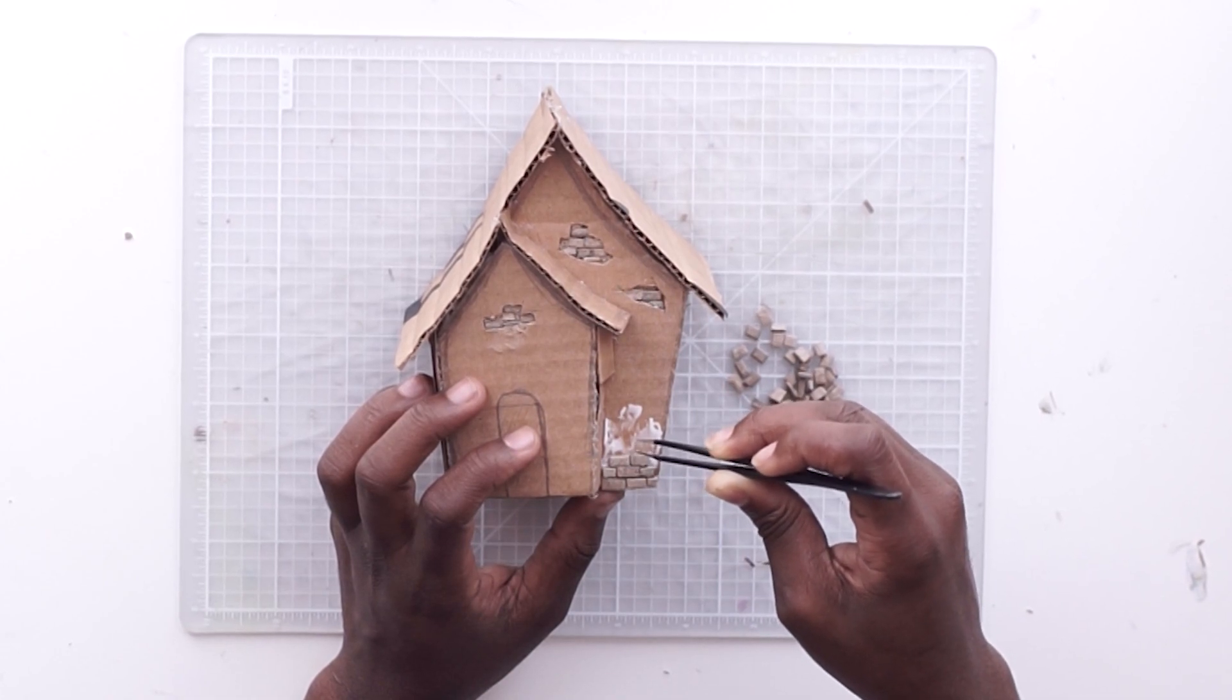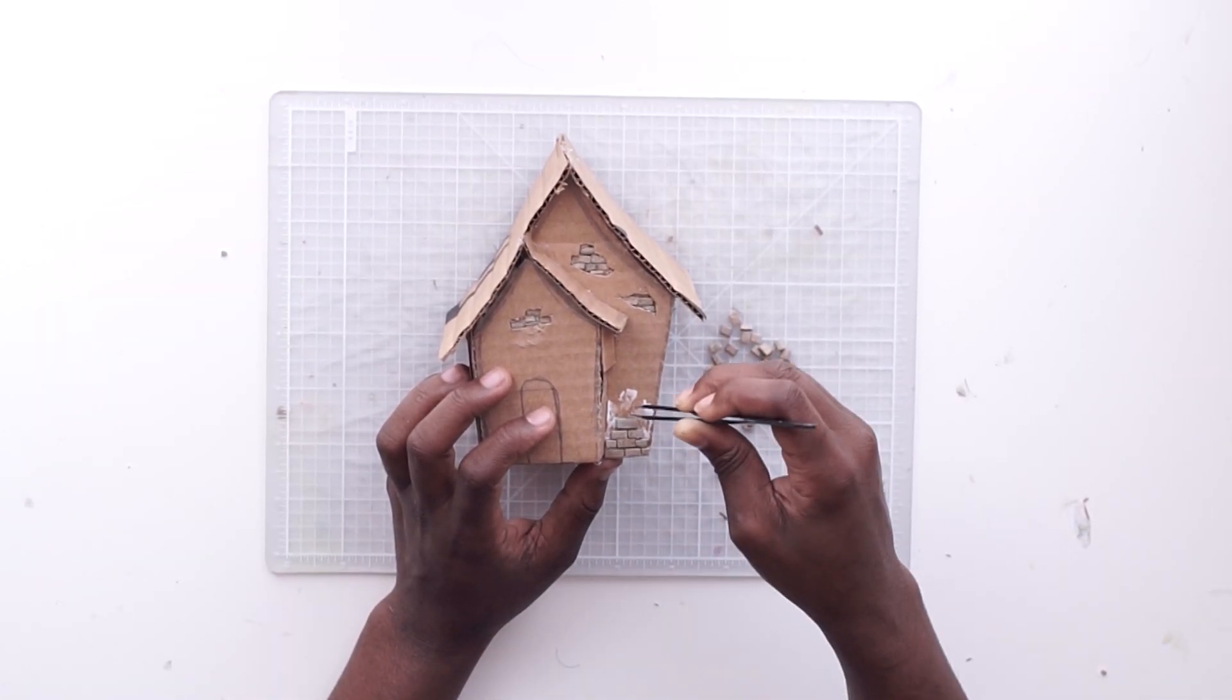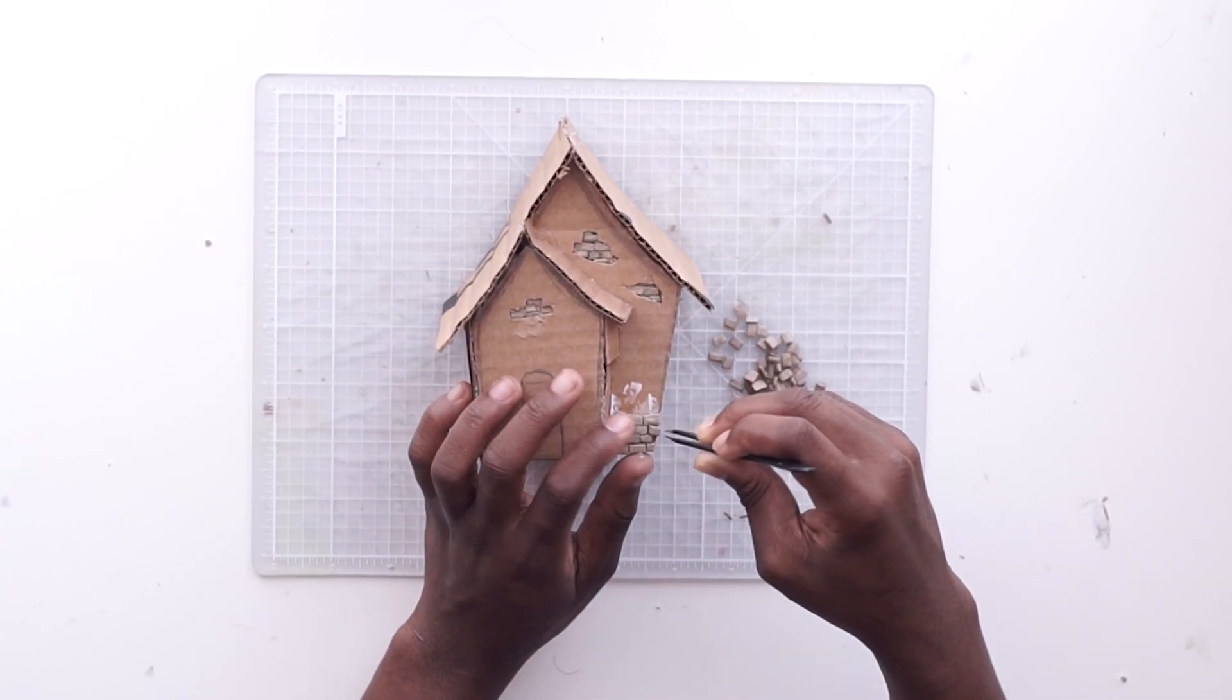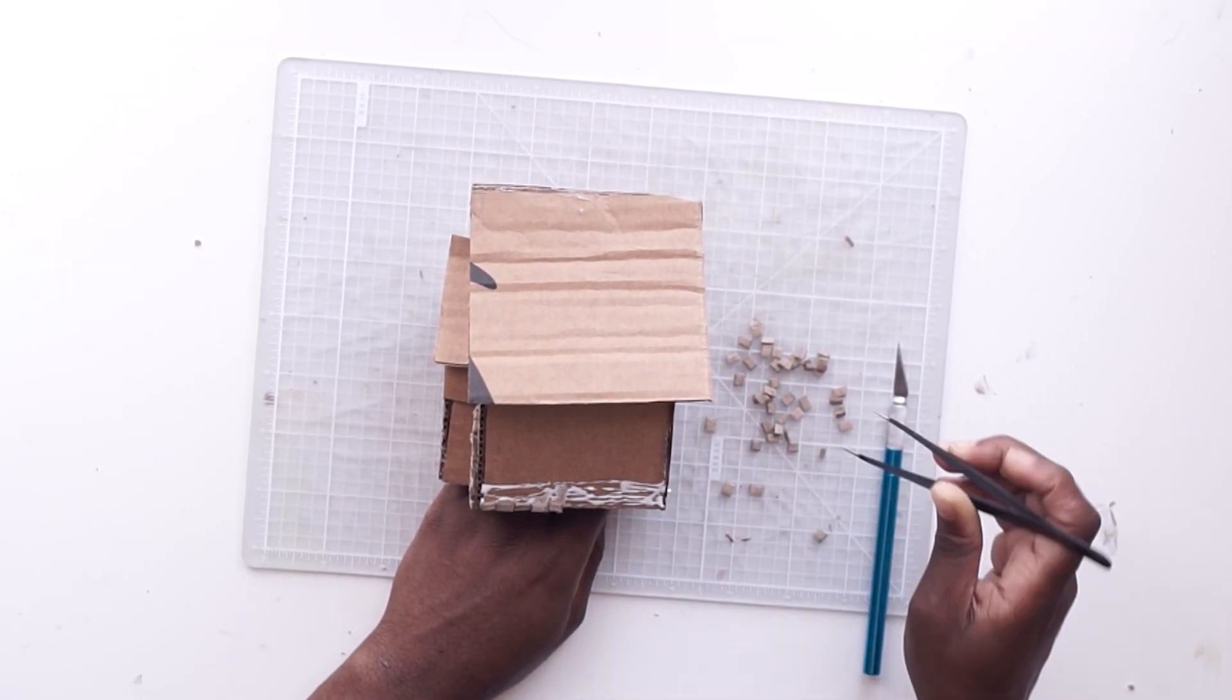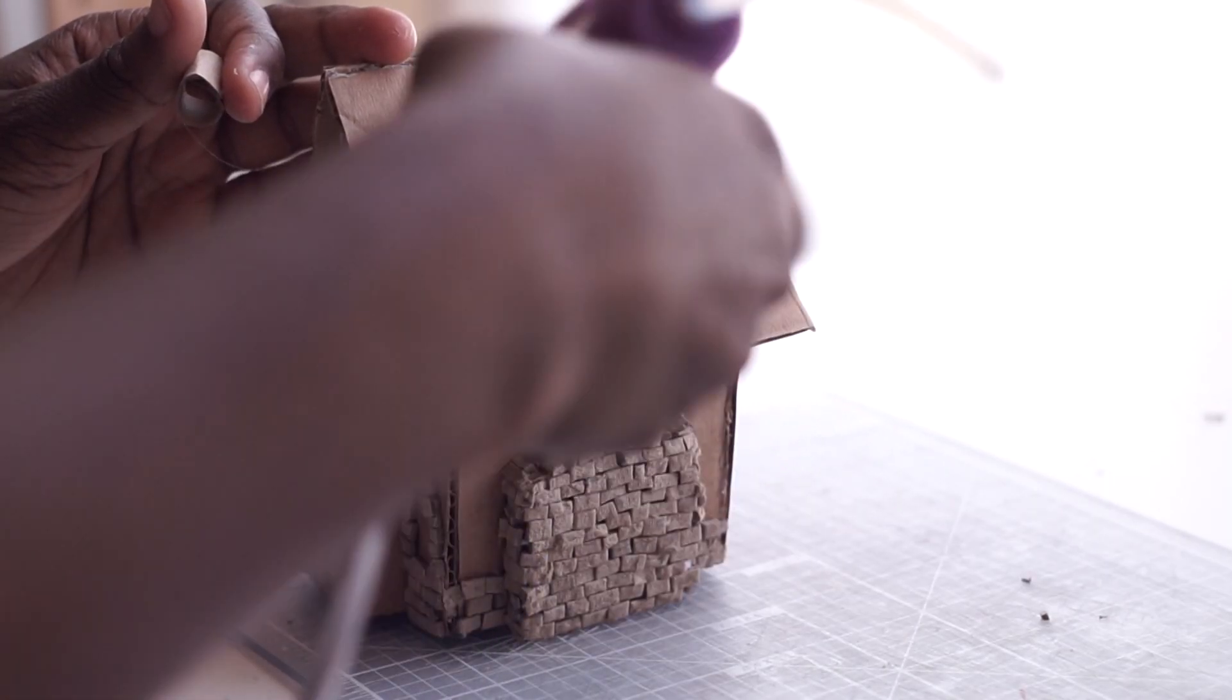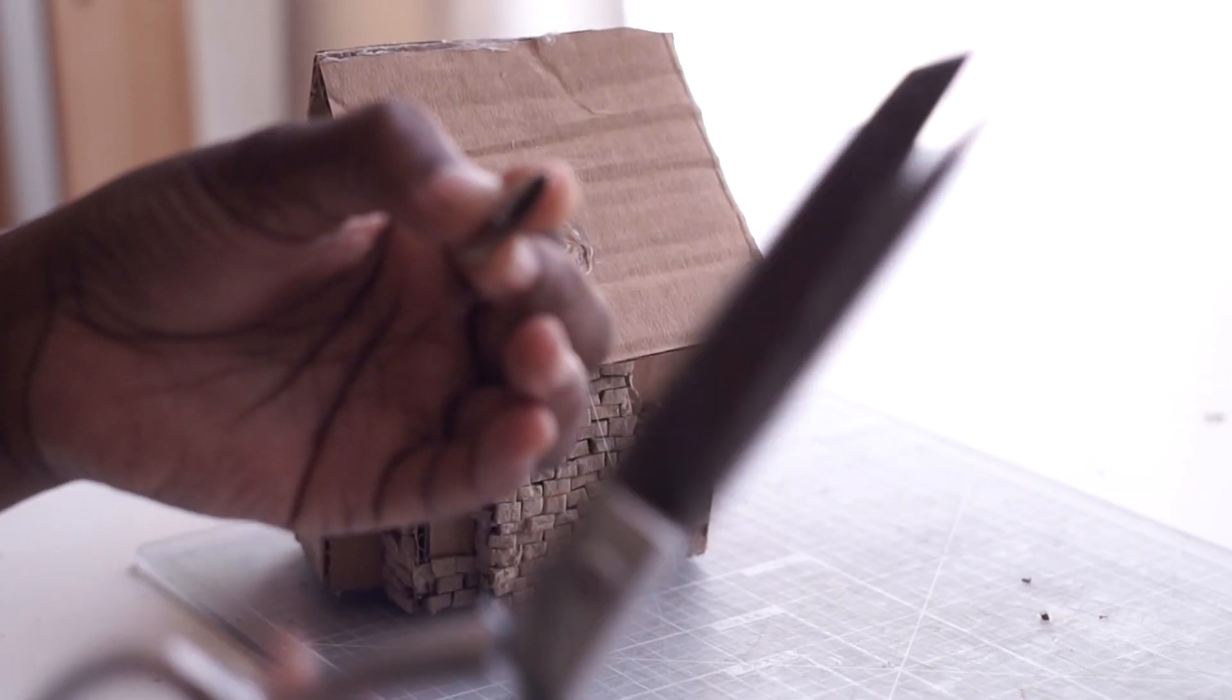You get so much texture, and it looks so nice for so little effort because the egg carton's already kind of textured, and then you can easily chop it up into tiny little squares.